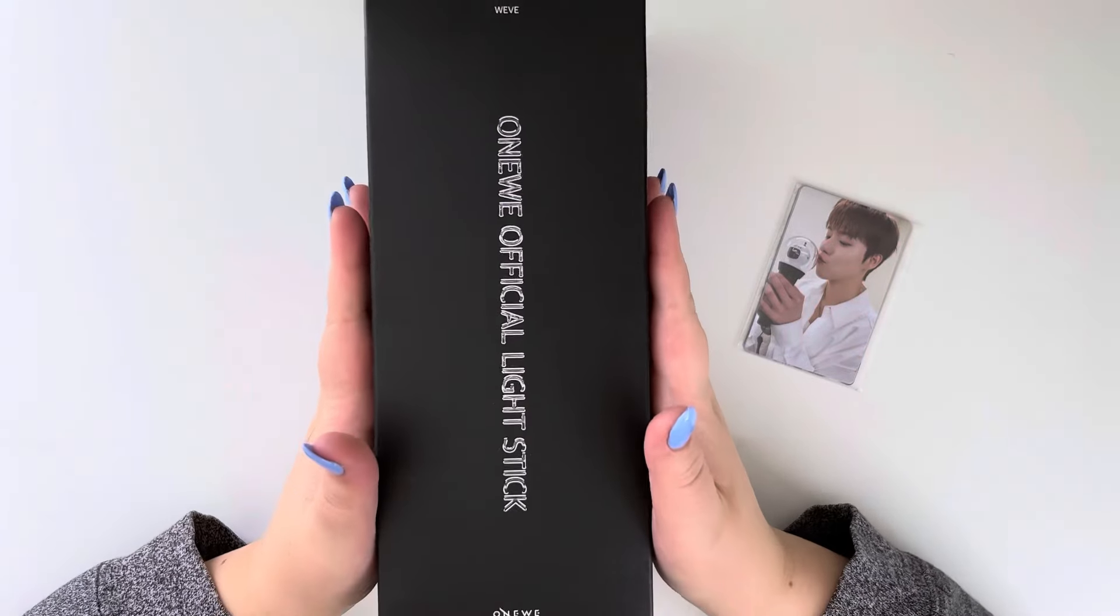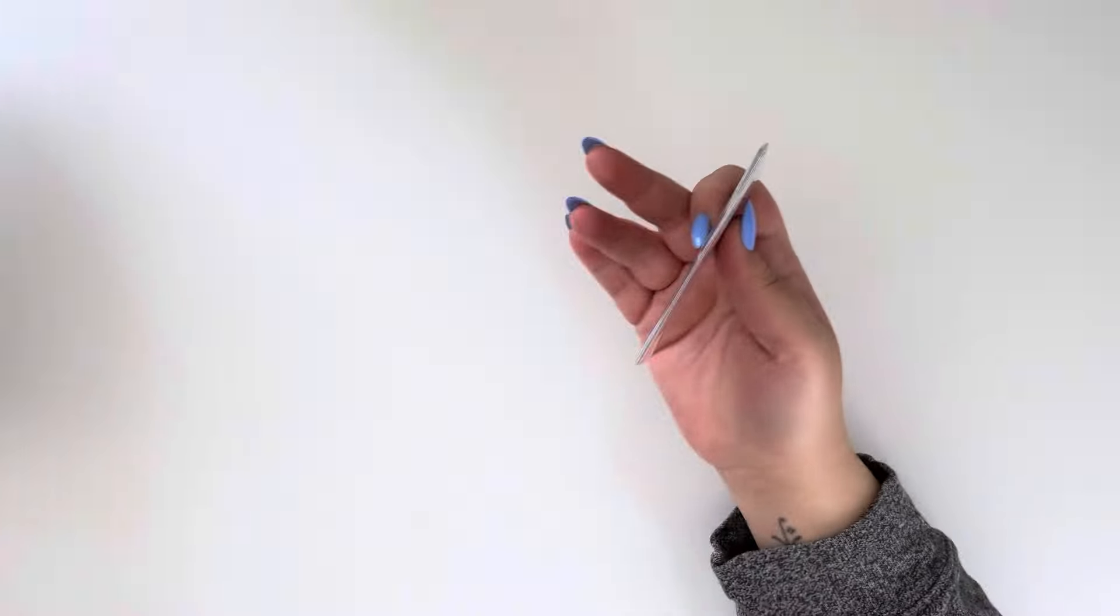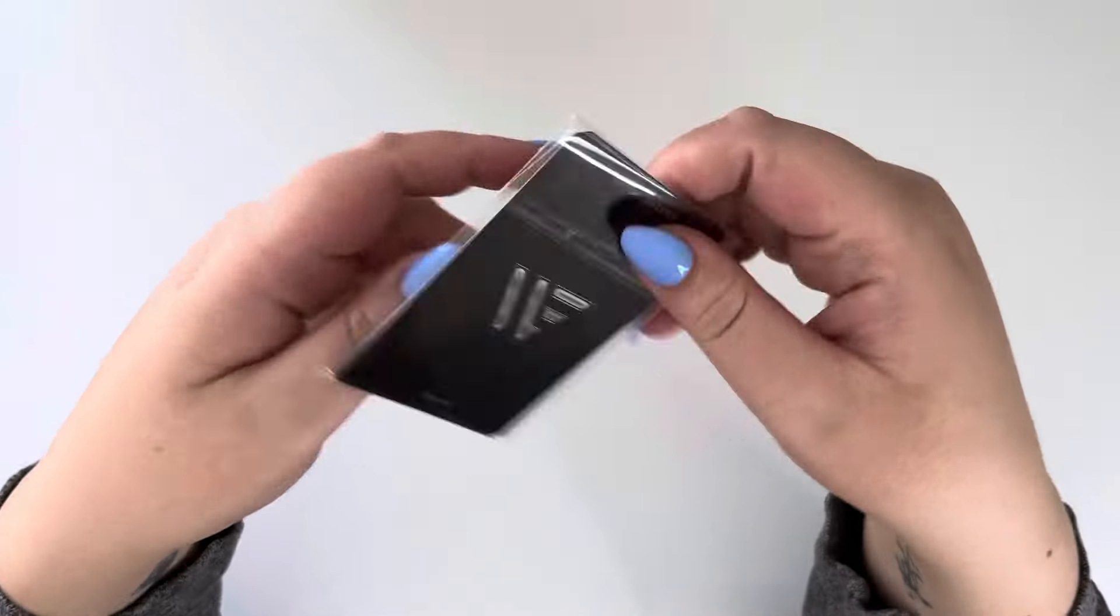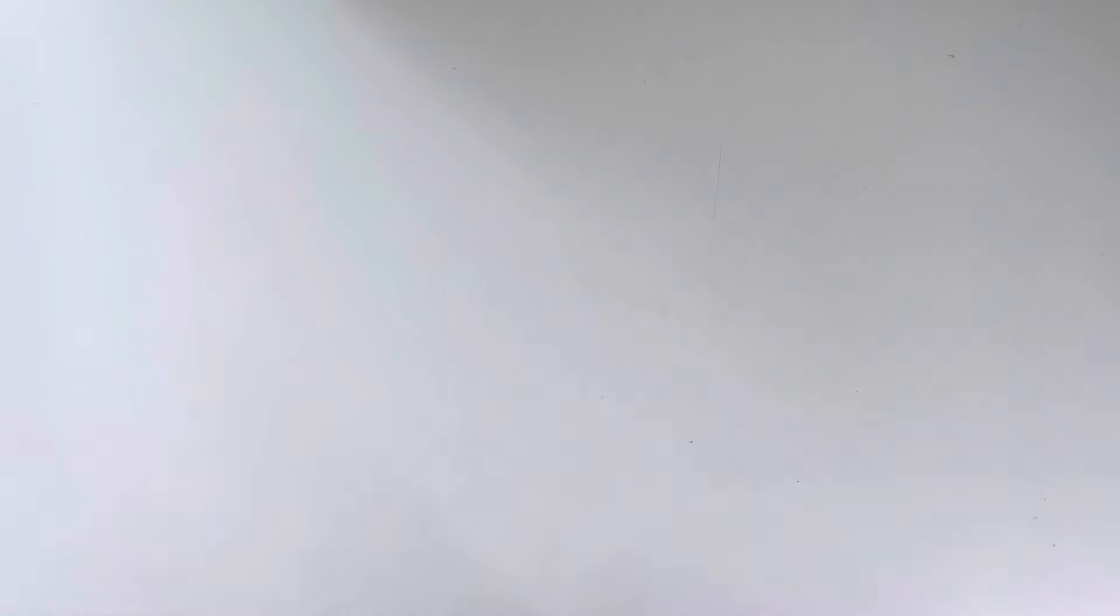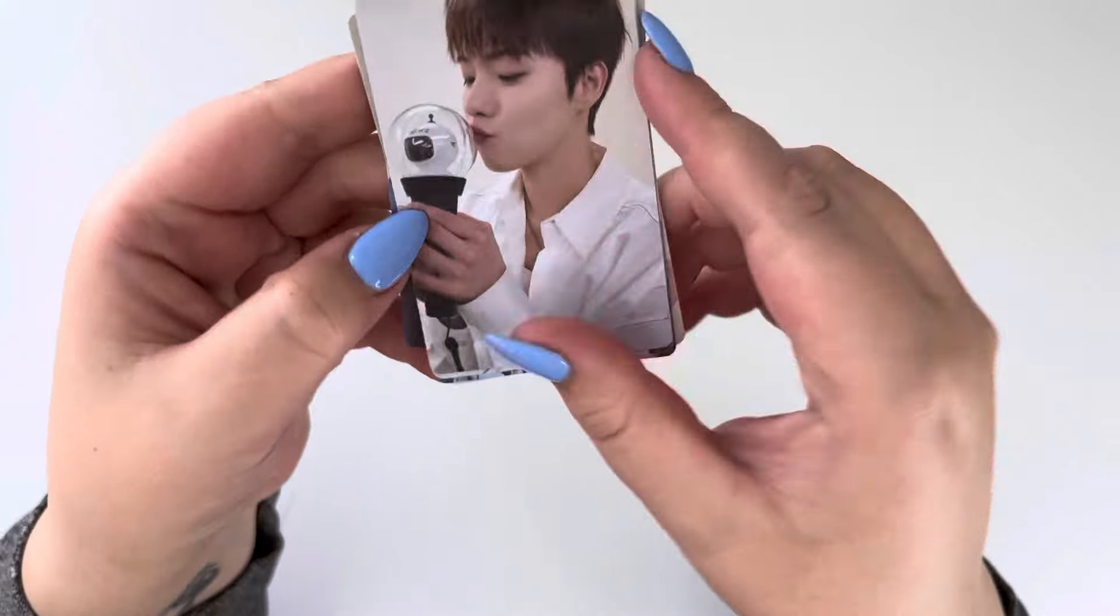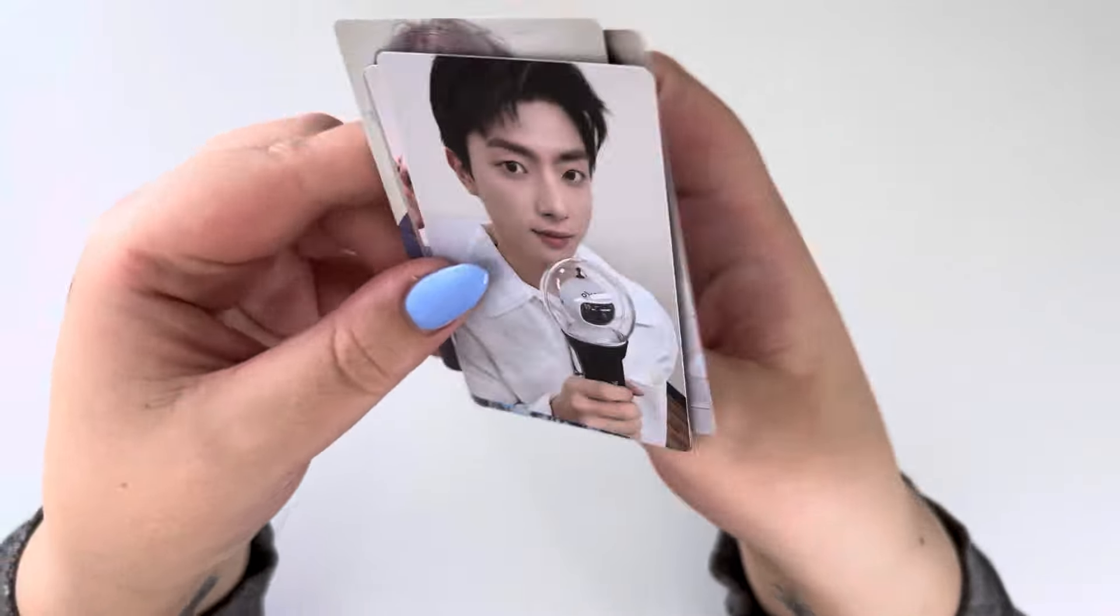Today we are unboxing OneWee's light stick. So before we get into the actual light stick, let me move that off to the side. I did pre-order this from BizEnt, so I have the pre-order photo cards. I think if you order this now, you probably wouldn't get these. Unfortunately, I don't think that the light stick just comes with these, but this is what they look like. There's what the backs of the cards look like.